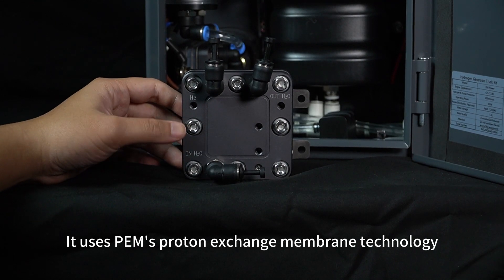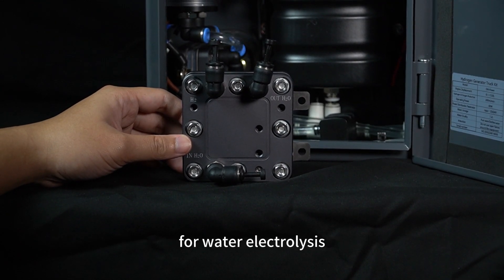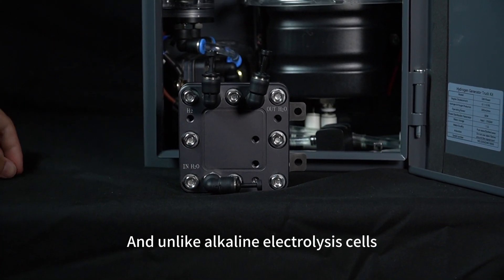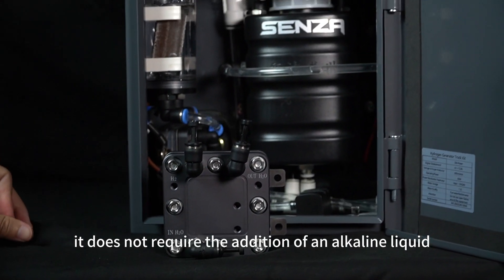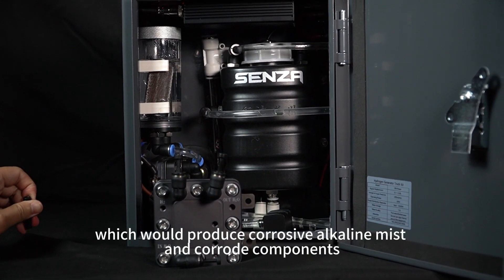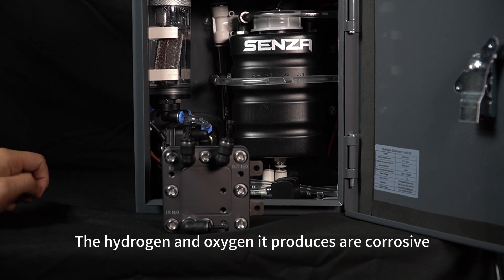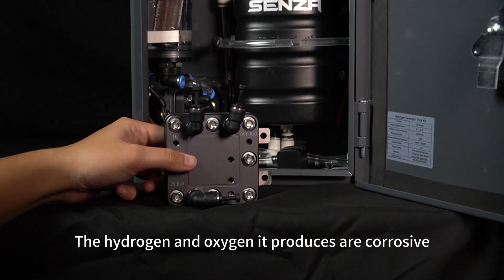It uses PEM's proton exchange membrane technology for water electrolysis. Unlike alkaline electrolysis cells, it does not require the addition of an alkaline liquid, which would produce corrosive alkaline mist and corrode components. The hydrogen and oxygen it produces are not corrosive.